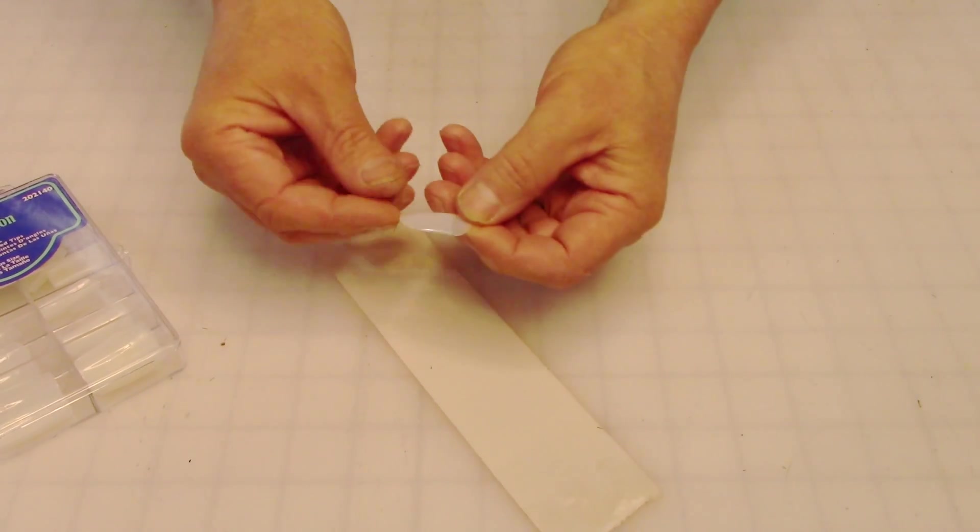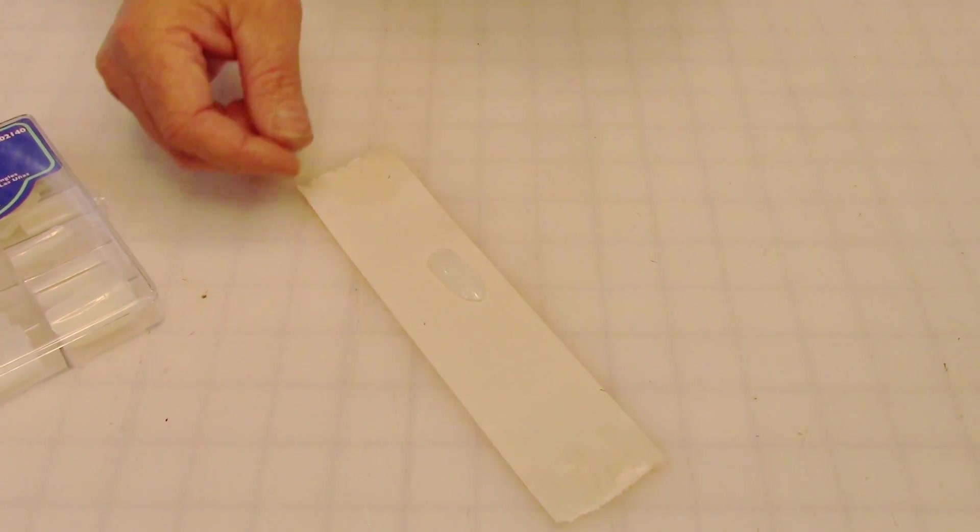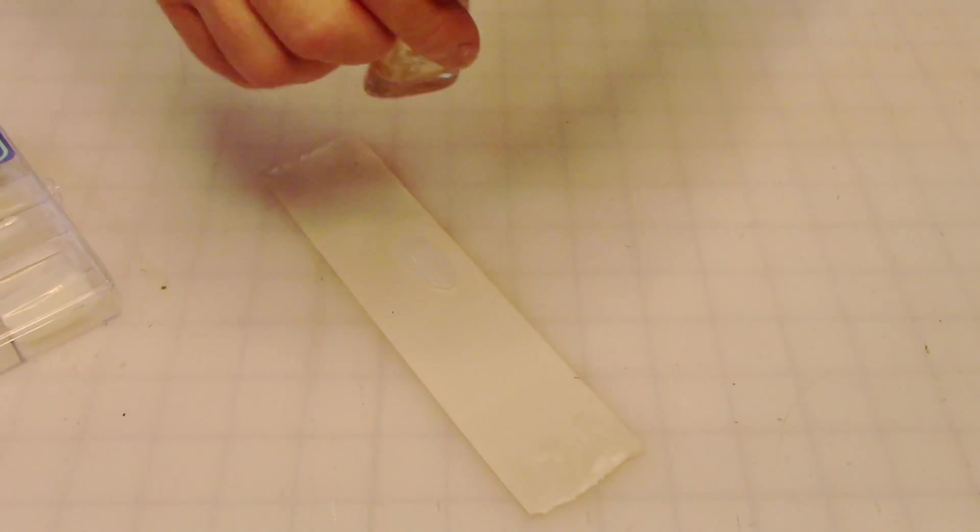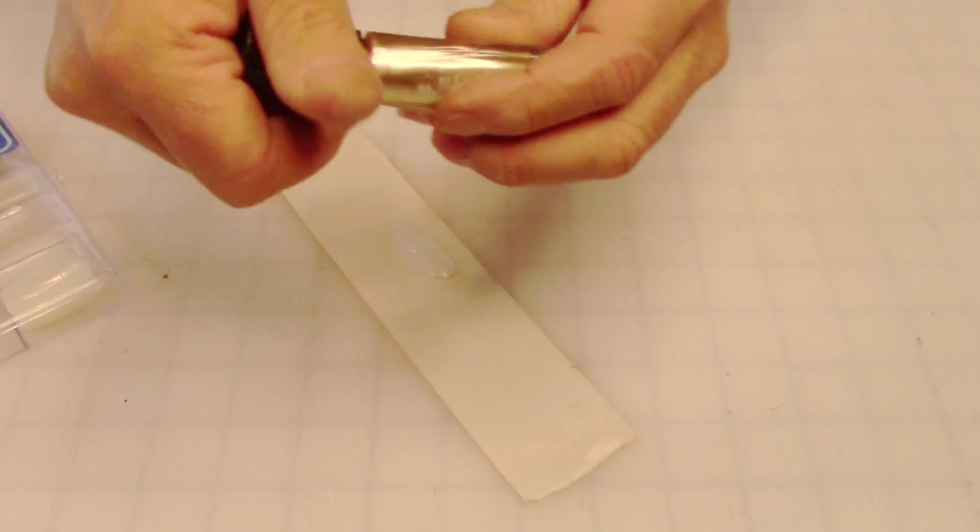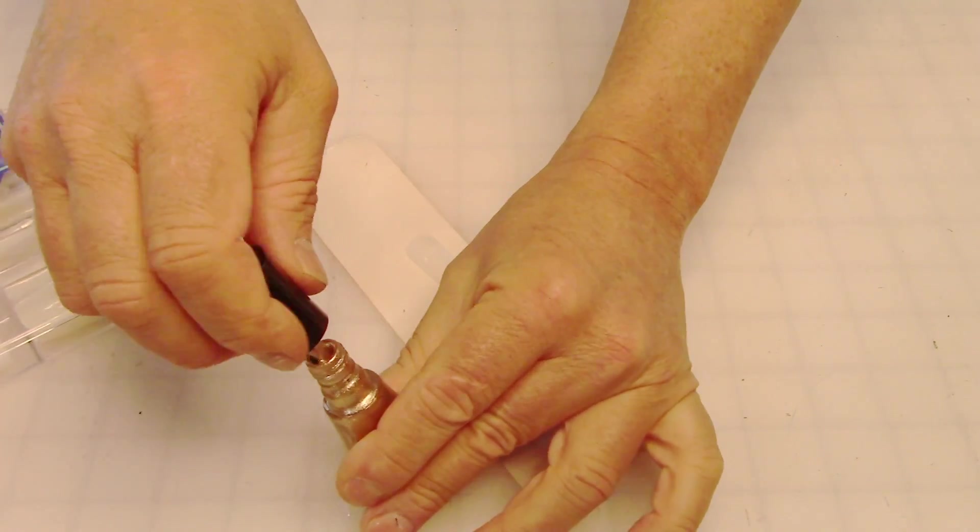Once you've picked out all your nails and you've cut them into your claw shape, what I do is I stick them down onto a piece of duct tape. What the duct tape does is it holds it in place so that when I'm painting, they're not moving all over the place.